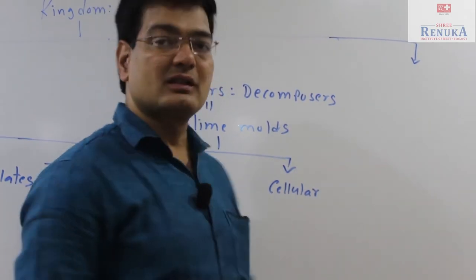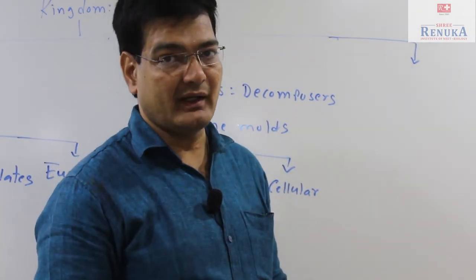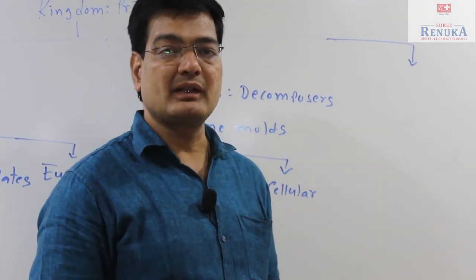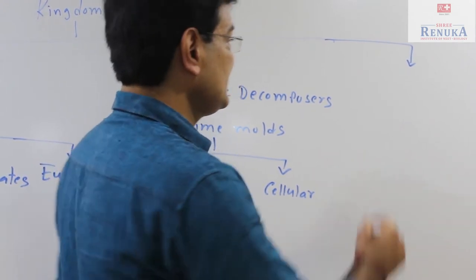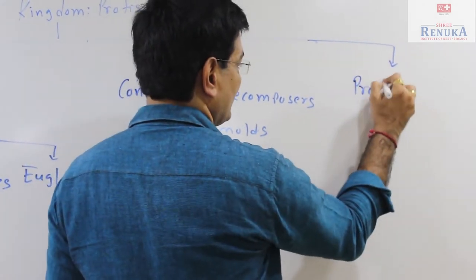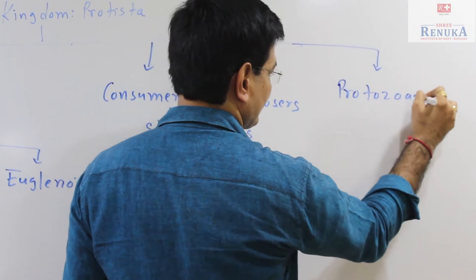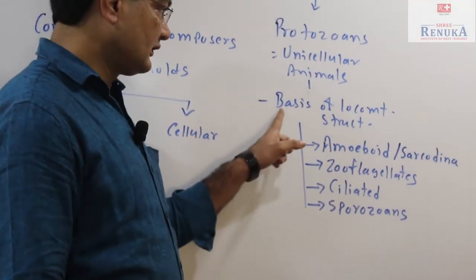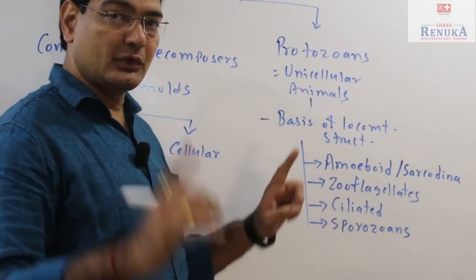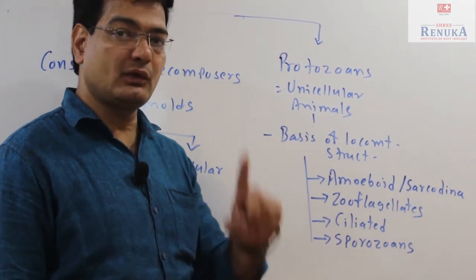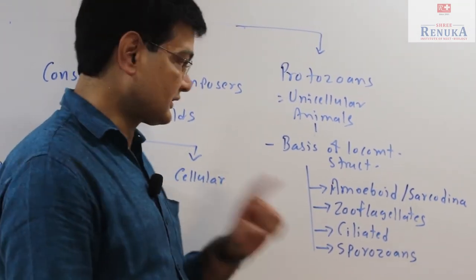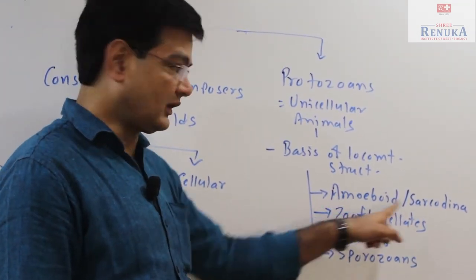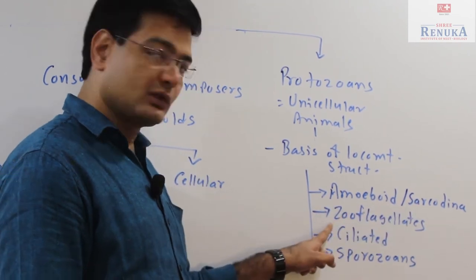Some protists are classified on the basis of their locomotive structure, and these are unicellular animals or protozoans. On the basis of locomotive structure, protozoans are classified into four different categories: amoeboid protozoans or sarcodina, zooflagellates, ciliated protozoans, and sporozoans.